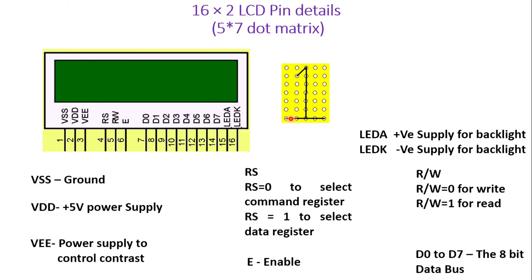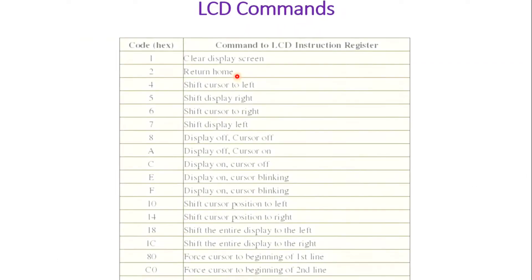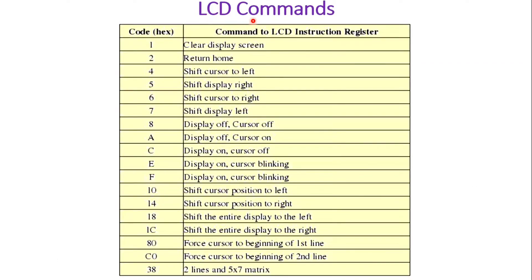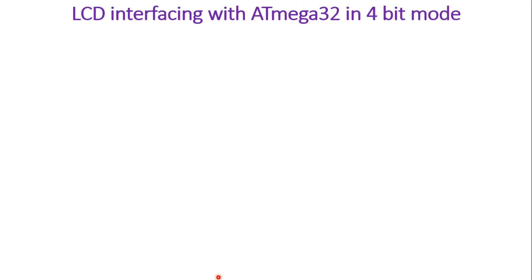The 5x7 dot matrix has 5 columns and 7 rows, and there are 32 such matrices in total used to print characters. Now for LCD commands: command 01 is used for clearing the display; AT forces the cursor to the beginning of the first line; C0 forces the cursor to the beginning of the second line. You can refer to all these commands in a similar fashion.